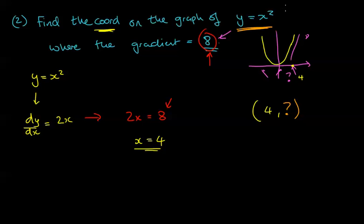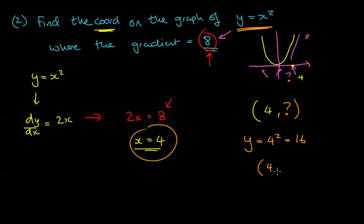We go back to the original function. We know x = 4, so we substitute into y = x²: y = 4² = 16. Therefore the coordinate is (4, 16).